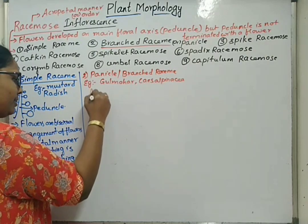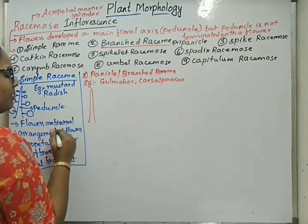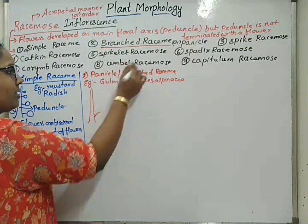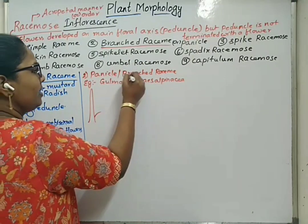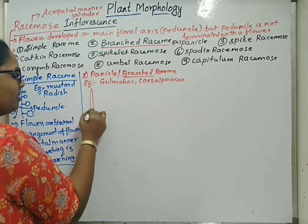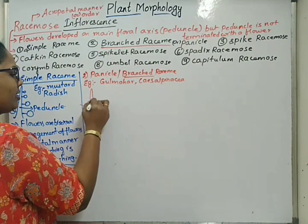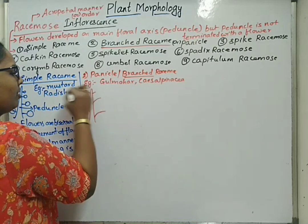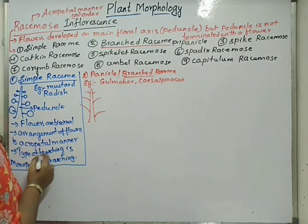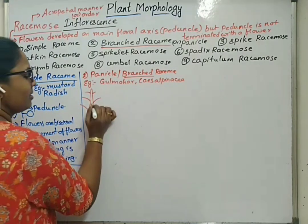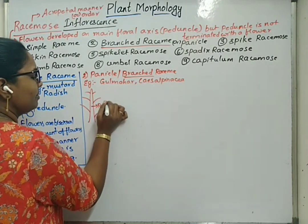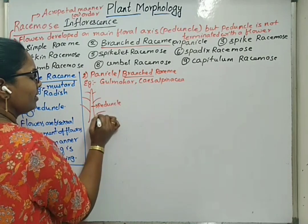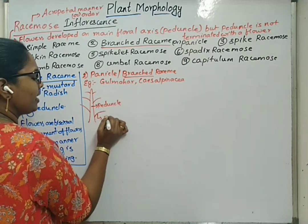Here, one peduncle develops but some branches are developed on the main axis. The word itself tells us — branched. So this is the peduncle and these are the branches.